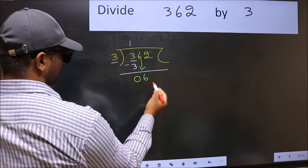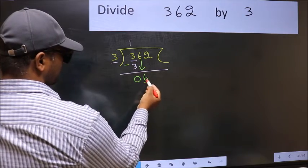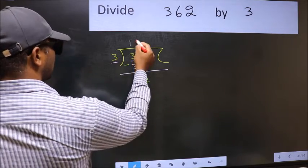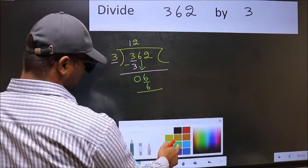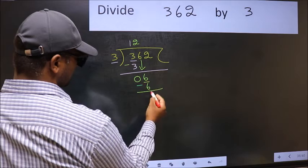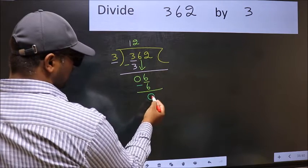6 down. Now, 6. When do we get 6 in the 3 table? 3 times 2 is 6. Now we should subtract: 6 minus 6 equals 0.